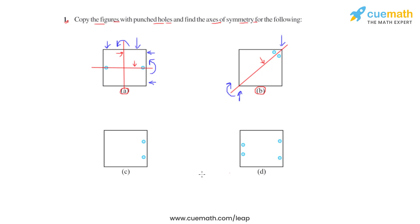Let us now see what happens in the case of figure C. Based on the position of the punched holes and the symmetry of the figure, if we divide this figure into two equal halves using a horizontal line and fold this figure about this line, we will again see that both equal halves coincide. So for figure C, this horizontal line is the axis of symmetry.